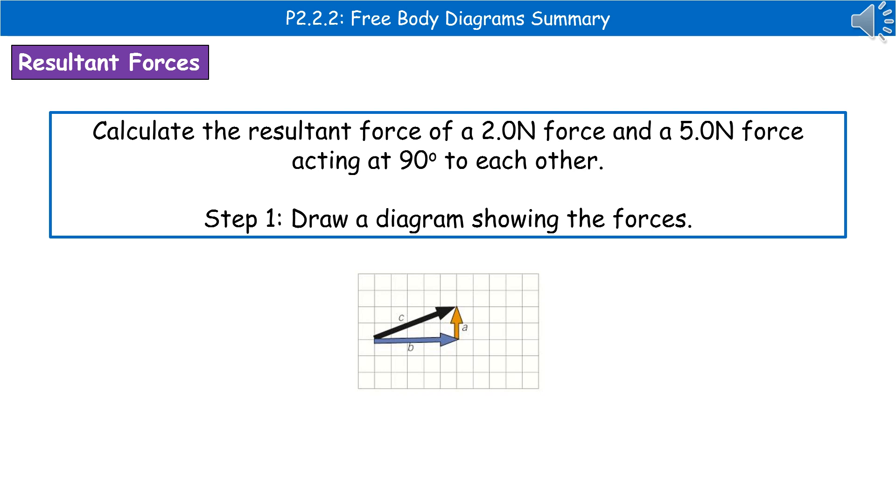That gives us the two parts of our triangle, which we can then join with line C. And what do you know? We've got the setup just like you would in maths when you're doing any problem using Pythagoras.